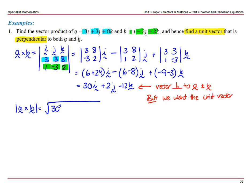That's going to be 30 squared plus 2 squared plus negative 12 squared, which is 1048. Simplifying, square root of four times square root of 262, so that's 2 root 262.